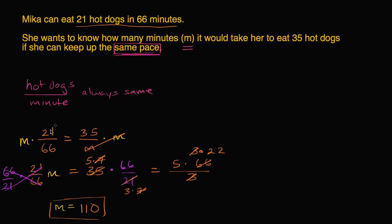When some of you might have tackled this, you might have set up a different equation. Instead of thinking of hot dogs per minute, you might have thought about minutes per hot dog. In that situation, you might have said: it took Mika 66 minutes to eat 21 hot dogs, and it's going to take her M minutes to eat 35 hot dogs — and if it's the same pace, these two rates are going to be equal.